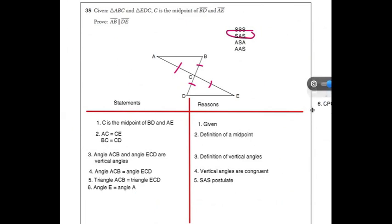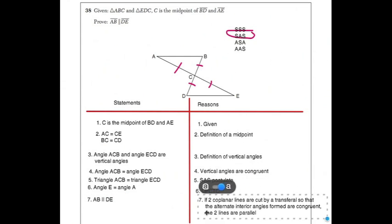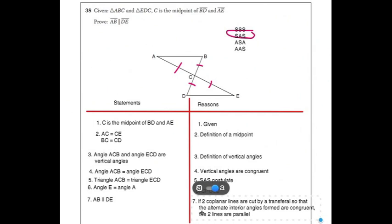And then after that, this is going to be your longest step, and this is a very important step though. You can do your proof statement that AB is parallel to DE because if two coplanar lines are cut by a transversal so that the alternate interior angles are congruent, the two lines are parallel. That's a very important step you need to remember, and you're probably going to need to know it for proof on your geometry regions.